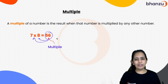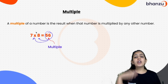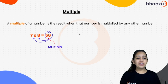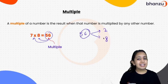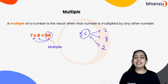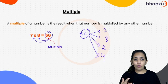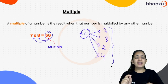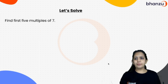Therefore, 56 is the multiple of 7, and 56 is also the multiple of 8. Because 56 comes in the table of 7, it comes in the table of 8 as well, it comes in the table of 2 as well, and 56 also comes in the table of 4. So therefore, 56 is the multiple of all of these numbers.